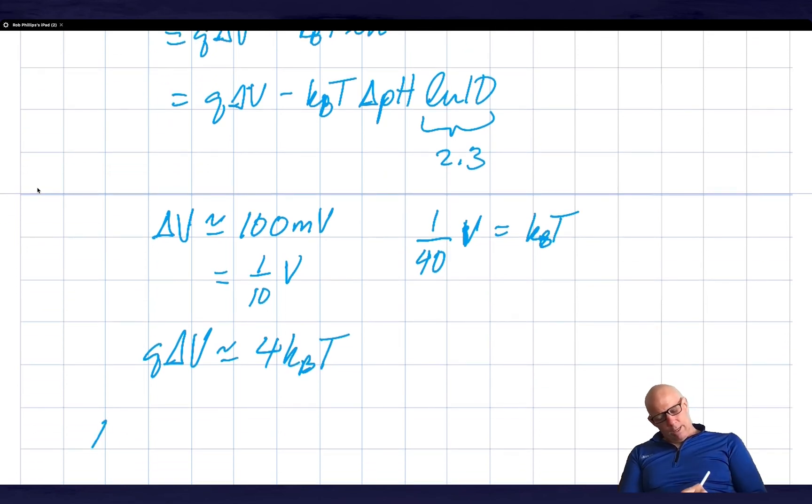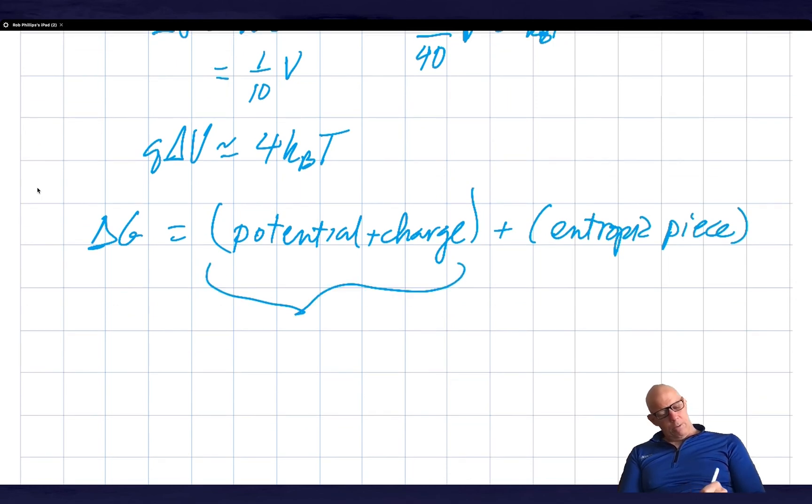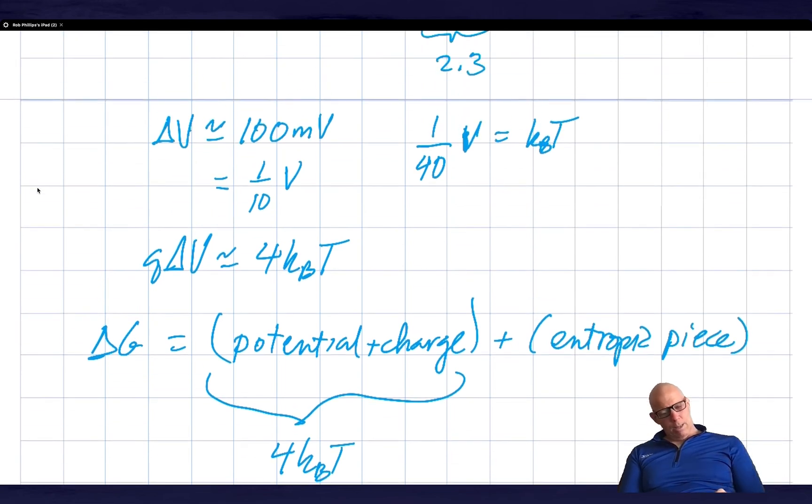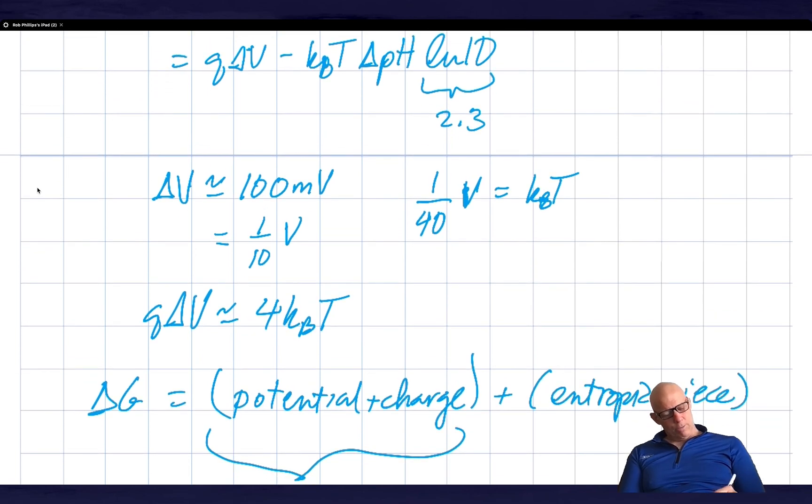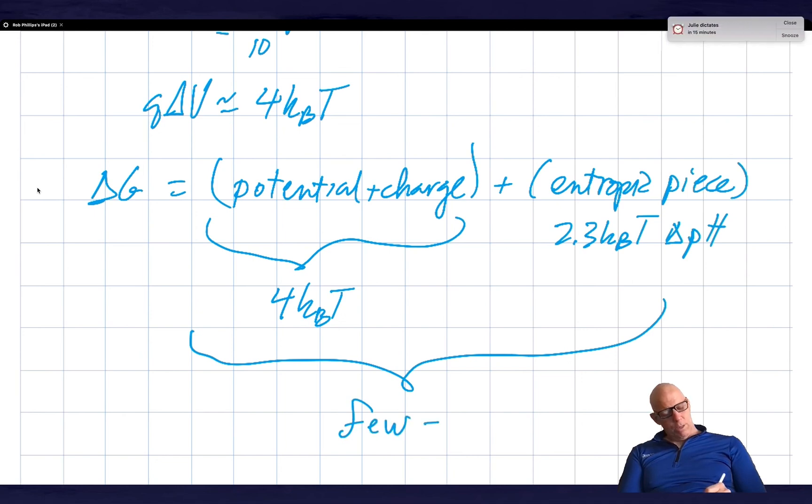The total delta G, there's going to be a part due to the potential plus charge, just that piece, and then plus the entropic contribution. And this guy we just got through saying is something like 4 KBTs, and the entropic piece we already know is something on the order of 2.3 KBT times the delta pH. So if I have a pH unit difference of 1, that's 2.3 KBTs. So the net thing is, this is few to 10 KBTs, is the idea that I would want to get across.